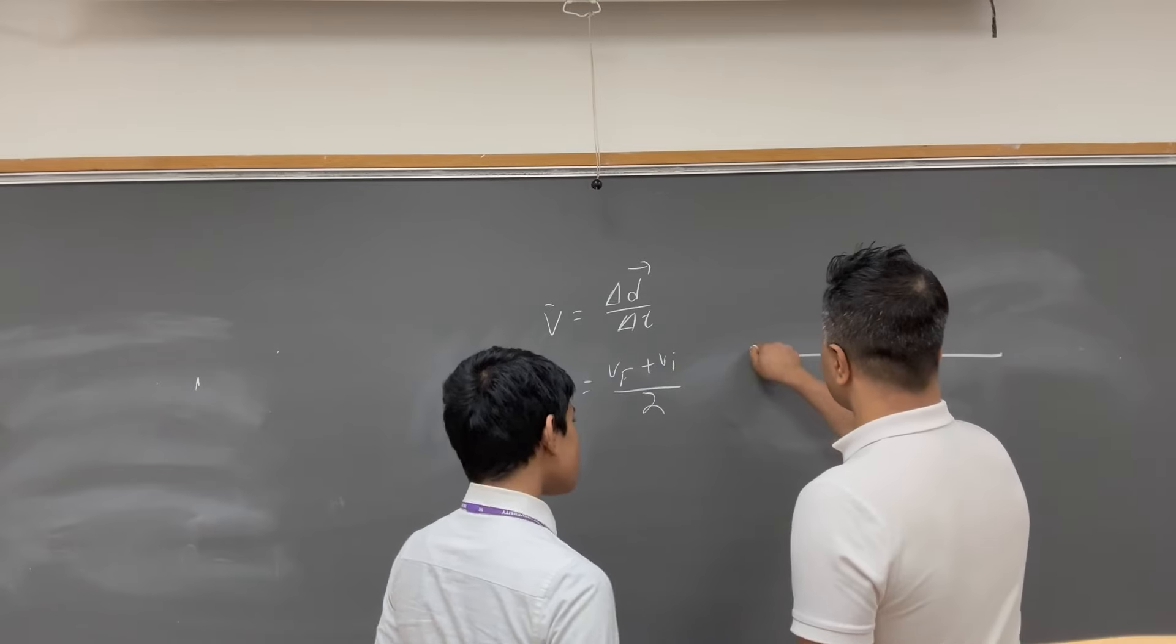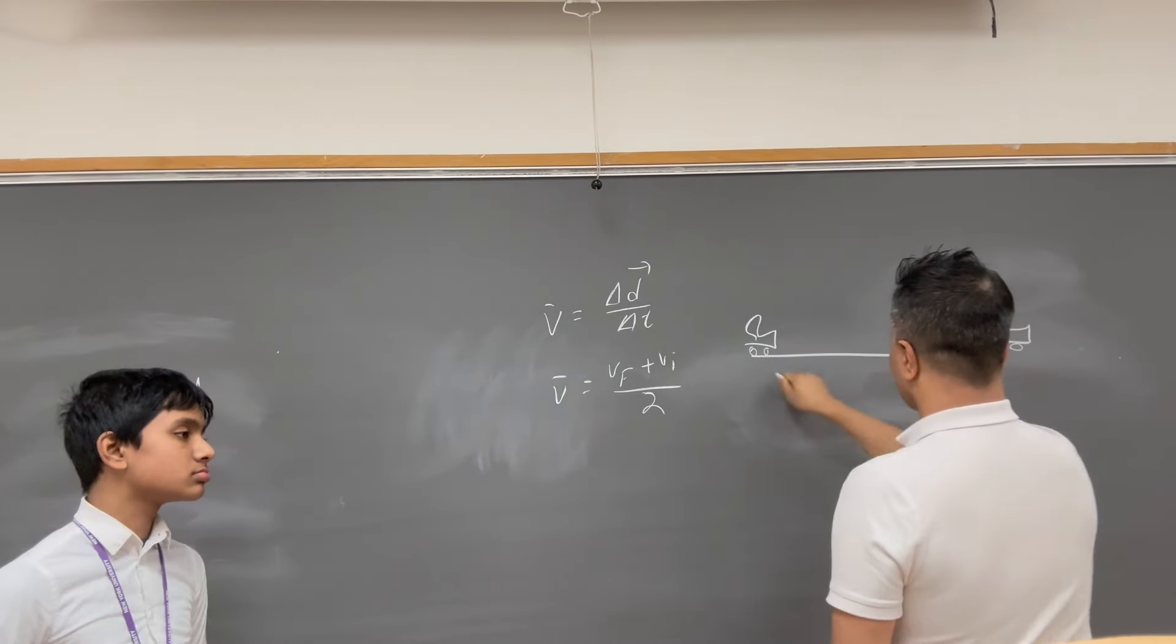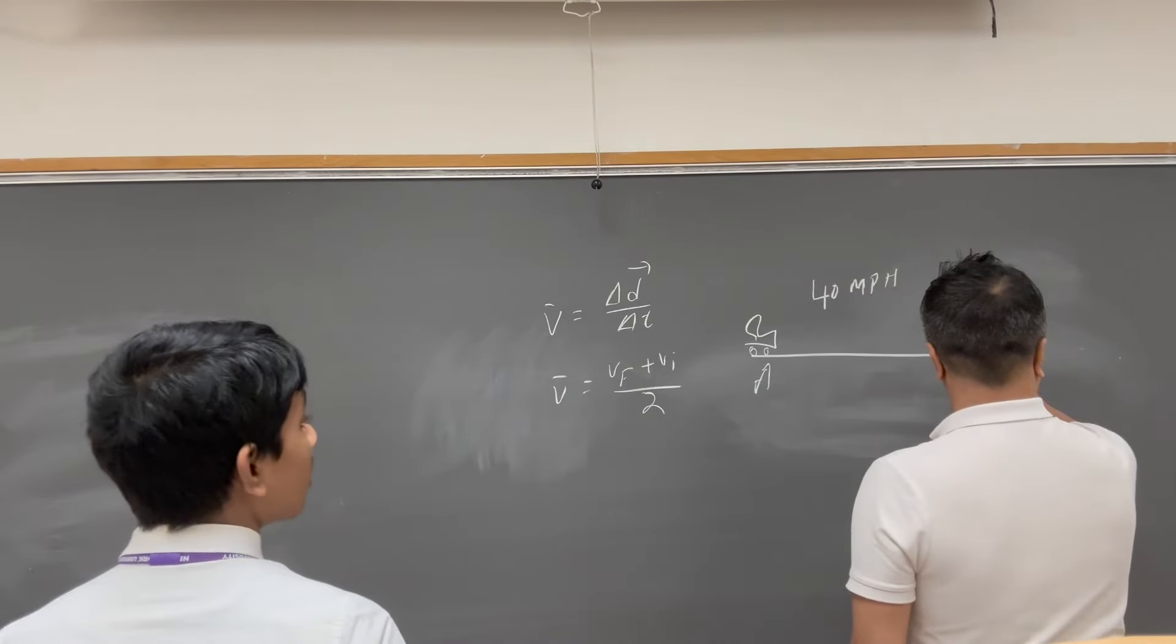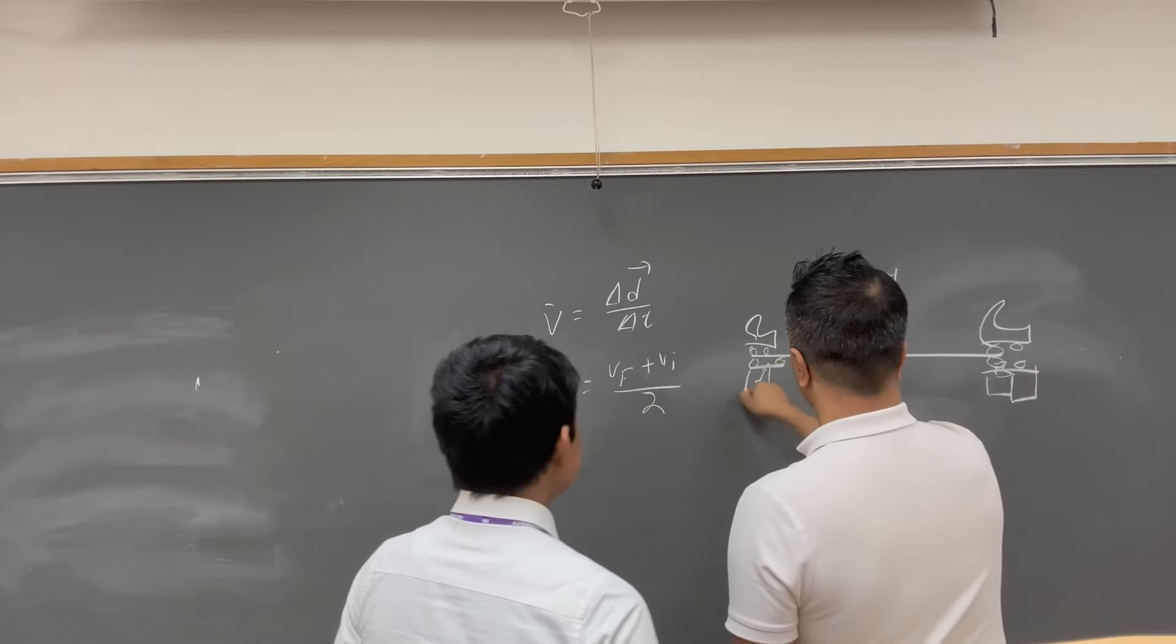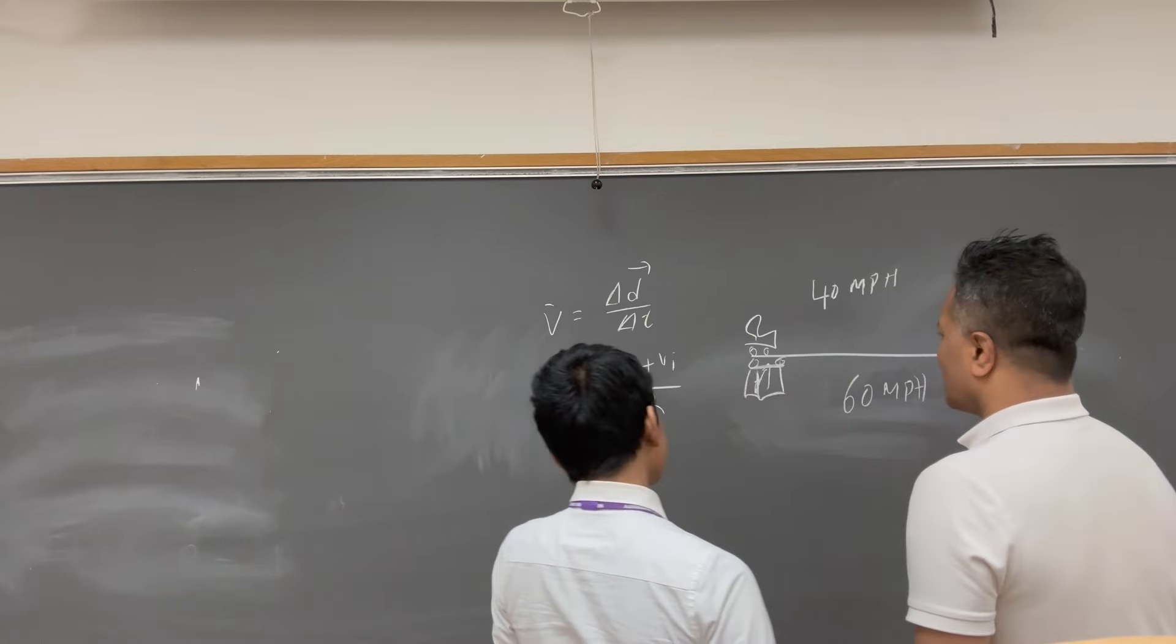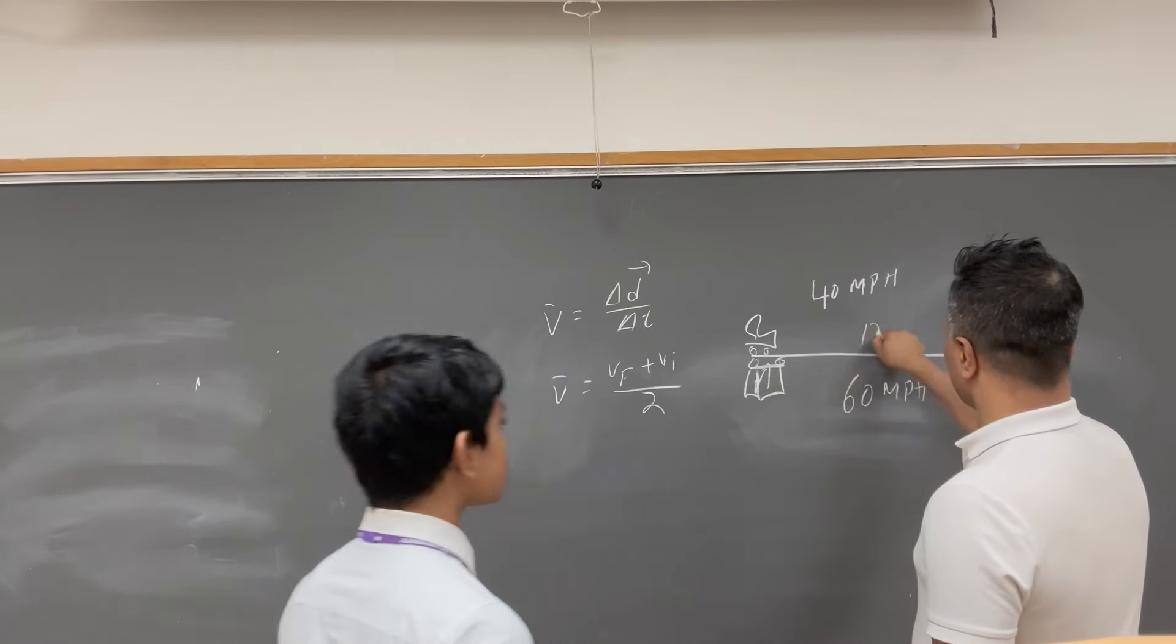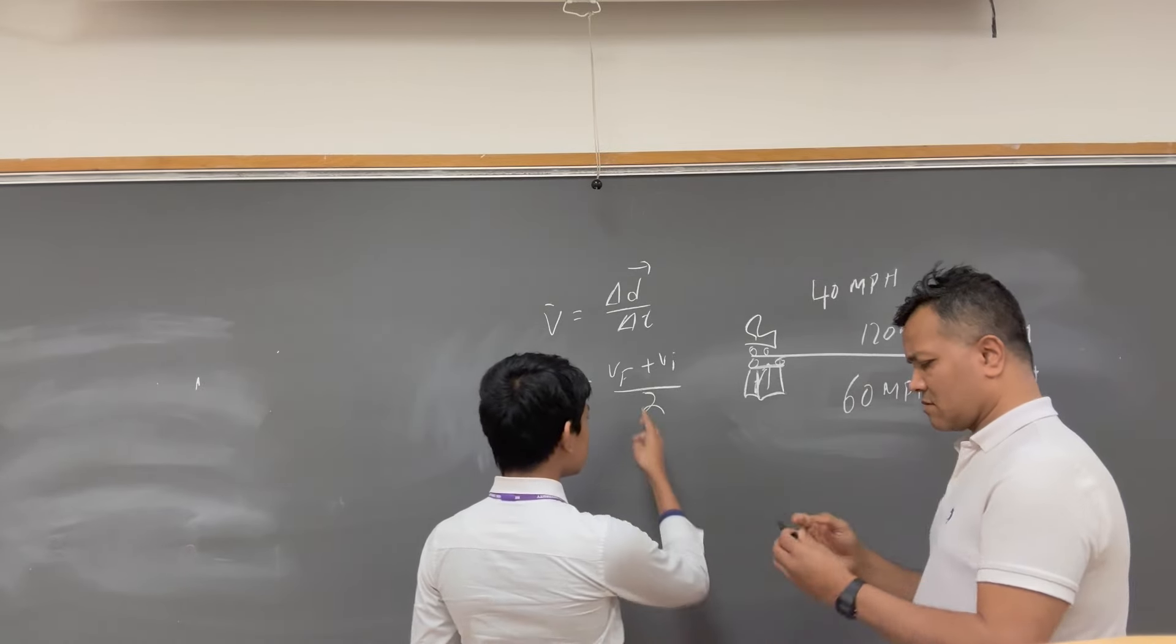So, the problem is: let's say Isaac is moving from A to B with 40 miles per hour. And B to A, immediately he moves from B to A with 60 miles per hour. So, Isaac, can you find the average velocity using both equations? And this distance is 120 meters. In fact, we actually don't need the distance as you can see in the second equation.